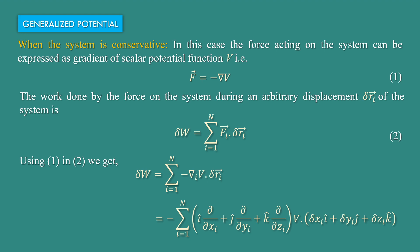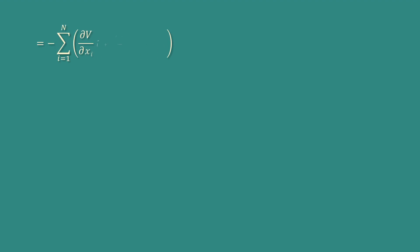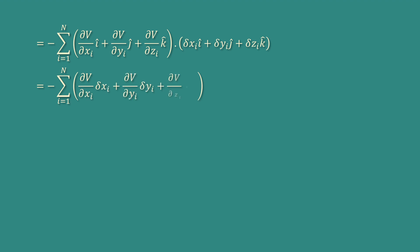Again, delta r_i can be written as delta x_i i-cap plus delta y_i j-cap plus delta z_i k-cap. Taking the dot product, this equals minus summation i goes from 1 to N of del V/del x_i into delta x_i plus del V/del y_i into delta y_i plus del V/del z_i into delta z_i.